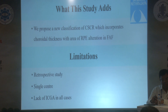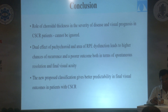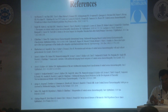Limitations were that it was a retrospective study done in a single center, and ICG was not done in all cases. To conclude, the role of choroidal thickness in cases of CSCR cannot be ignored. The dual effect of pachycoroid and area of RPE changes was associated with greater recurrences and poorer outcomes in visual acuity, and the new proposed classification system gives better predictability of final visual outcome in such patients.